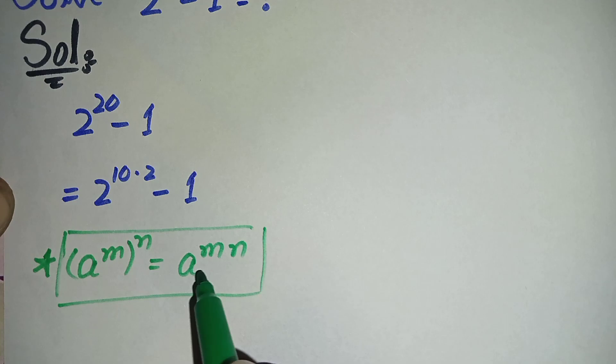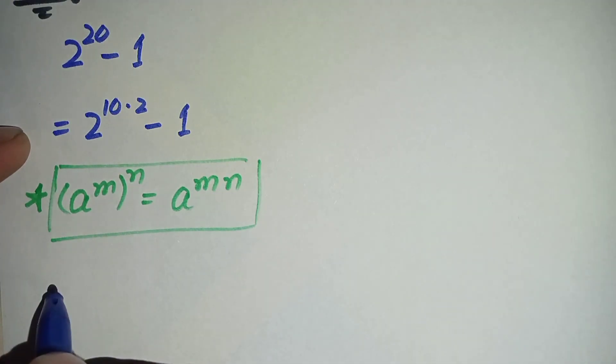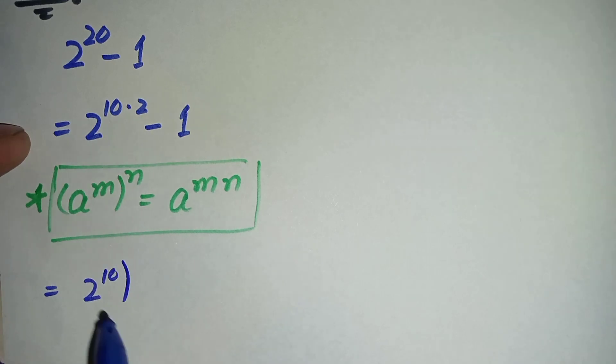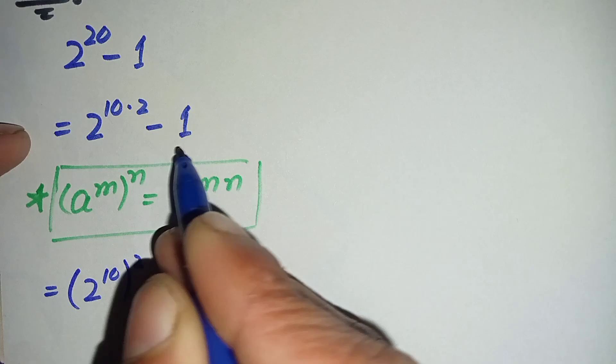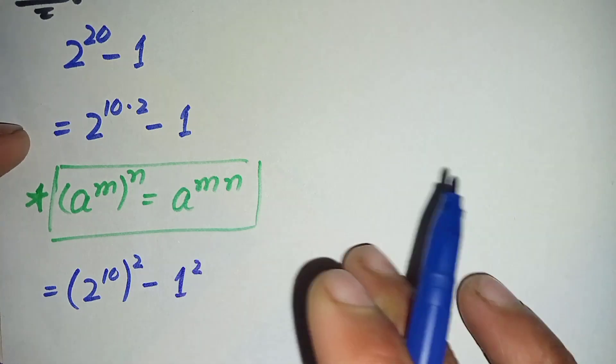So here this term is in this form, so we will change it from this form to this form. So it will become 2 raised to power 10, raised to power 2, minus 1. And we can also write this one as 1 square, because 1 square is again equal to 1.